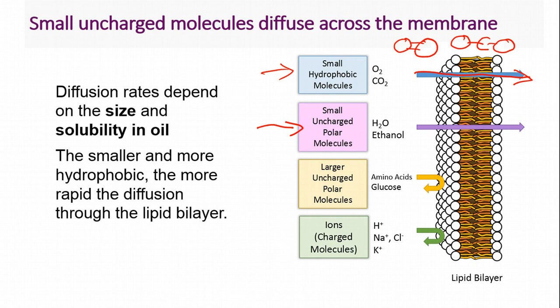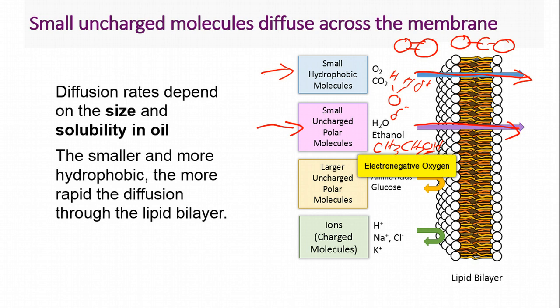A molecule like water is polar because it has a partial negative charge on oxygen and a partial positive charge on the hydrogens. However, it is not charged and it is small, so it can readily diffuse through our lipid bilayer. Another example is ethanol (CH3CH2OH) — it's polar because of the electronegative oxygen, but it is small and does not carry a charge, so it can pretty easily go through our cell membrane. However, larger uncharged polar molecules such as amino acids or glucose cannot pass through the membrane easily.